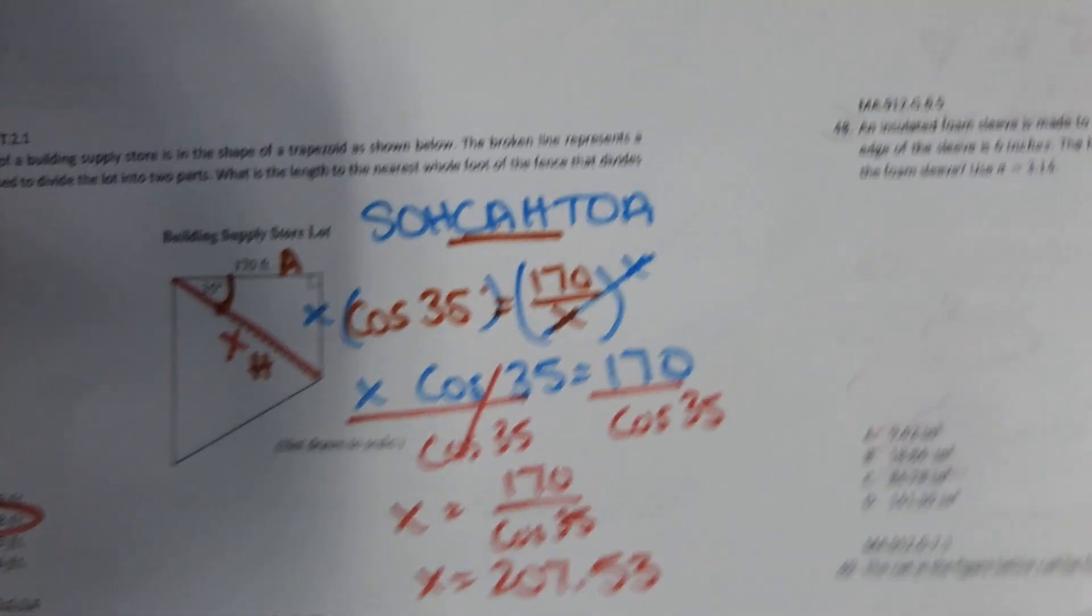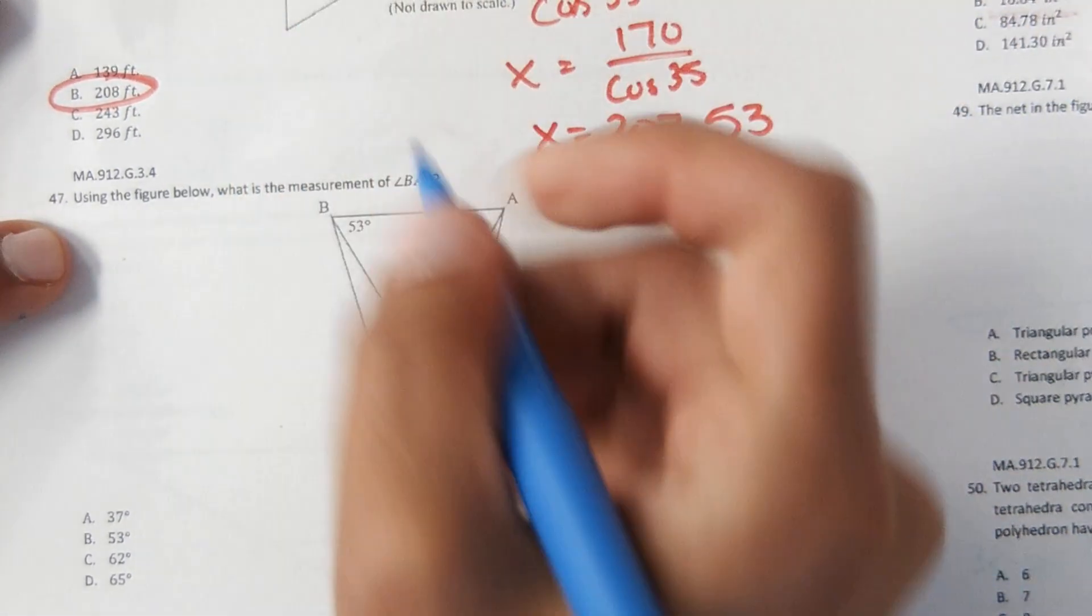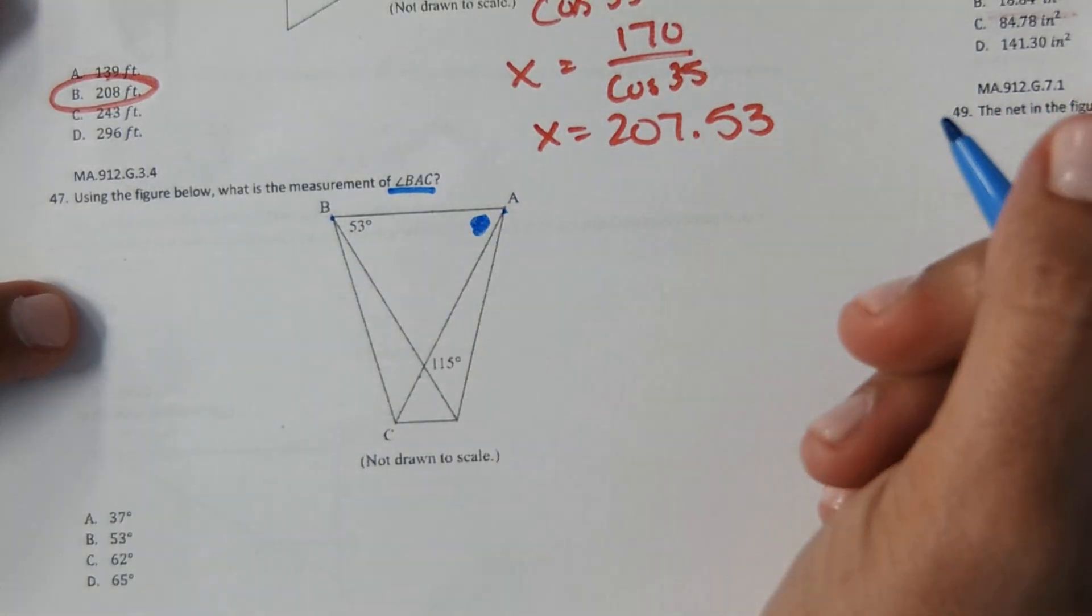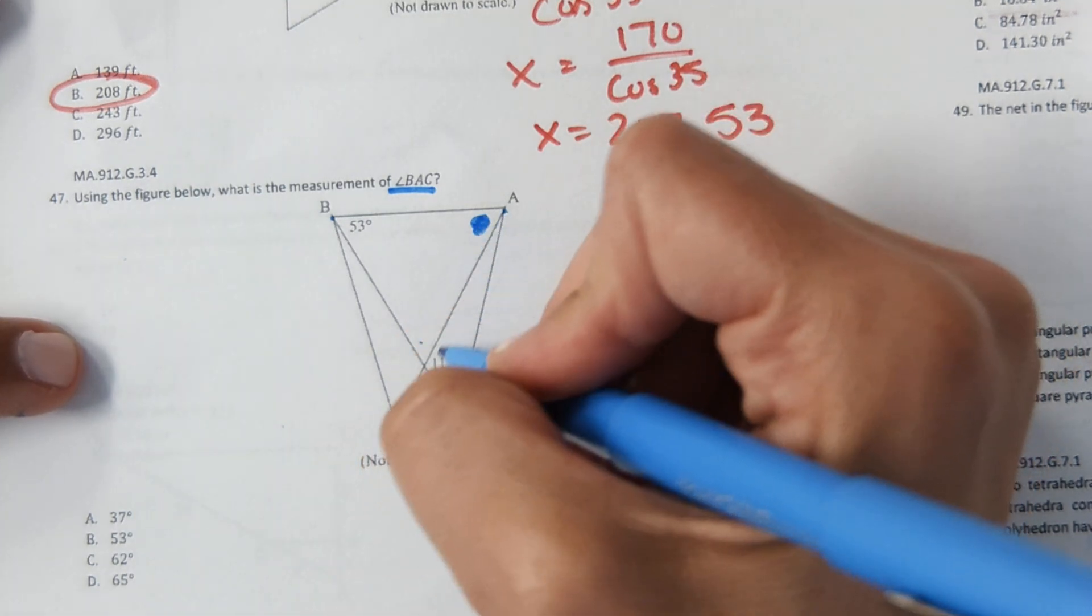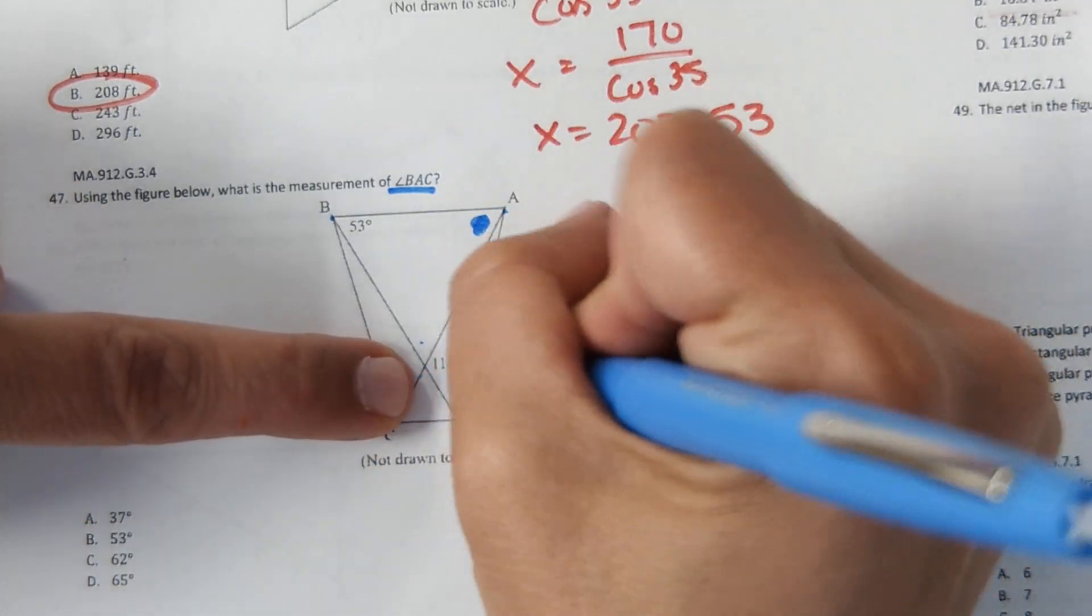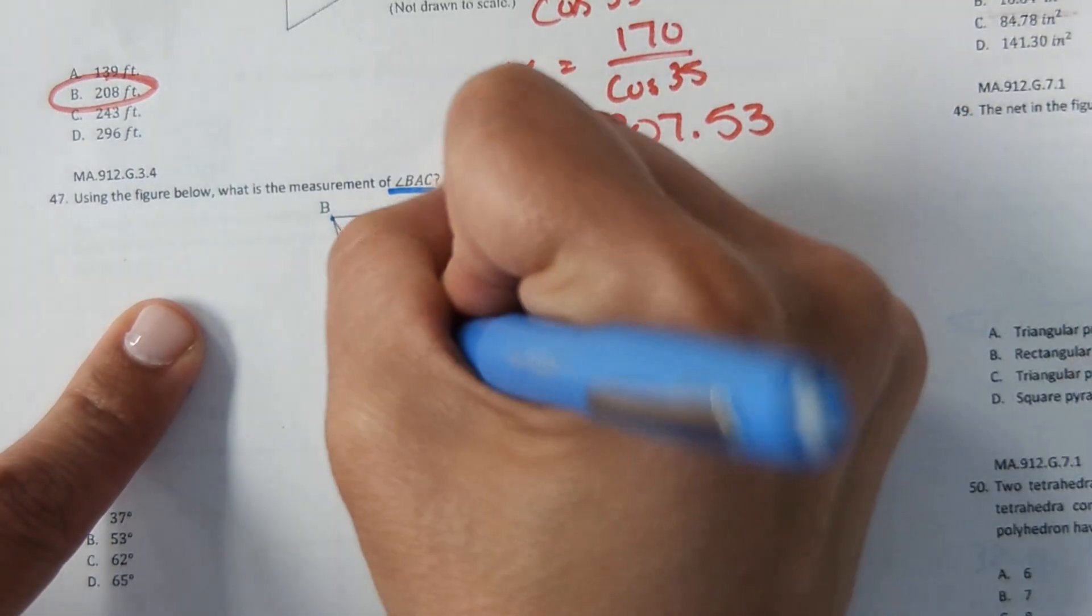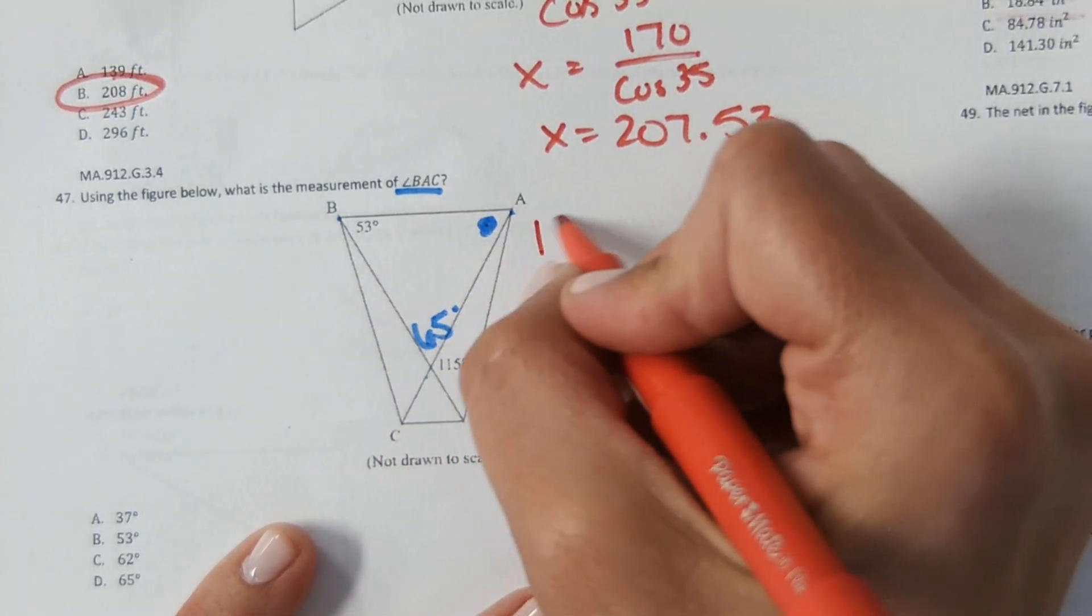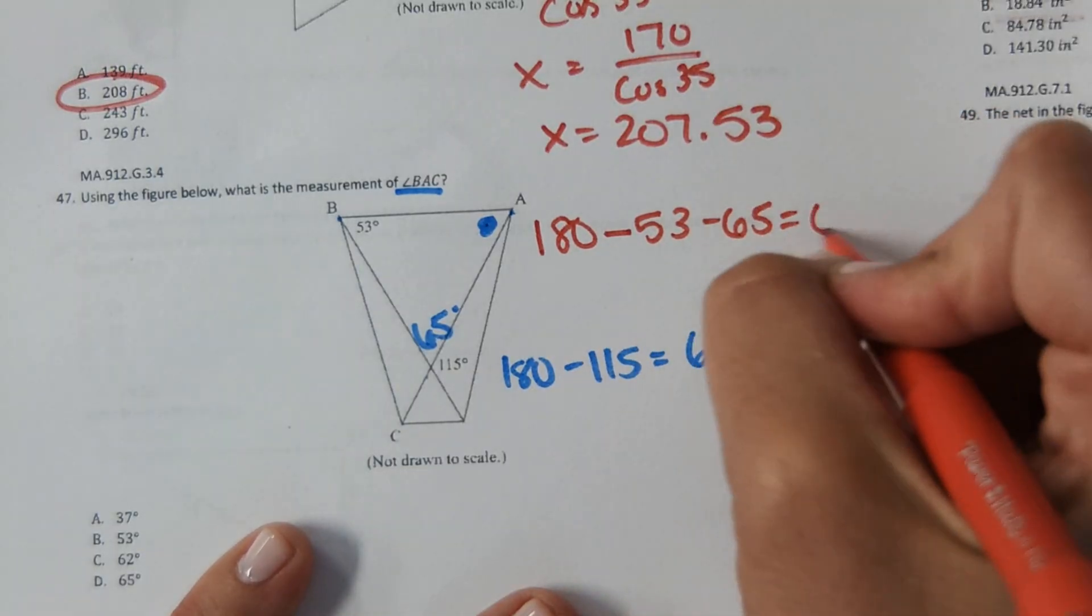The next one. Using the figure below, what is the measurement of angle BAC? So identify the angle BAC. It would be this angle right here. I see a triangle here. So if I just find this angle, I can do 180 minus these two to find this angle. So these two form a linear pair. So they're supplementary. So I can do 180 minus 115 to find this angle. And that would be 65 degrees. And then to find this angle, I can use the angles of a triangle. So the angles of a triangle add to 180. So 180 minus 53 minus 65. And I get 62 degrees.